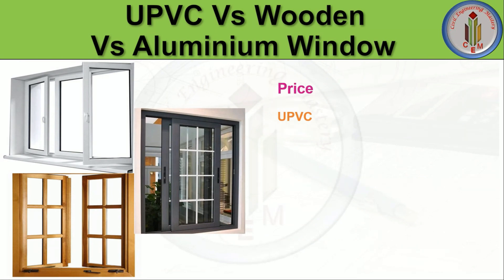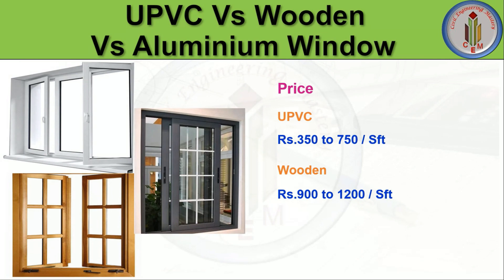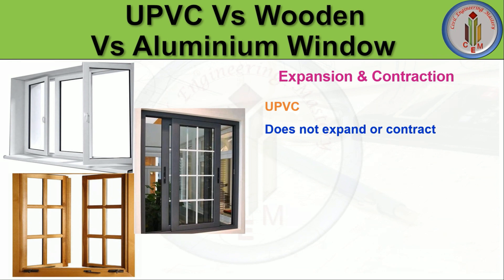Next, let's discuss price. uPVC windows cost about ₹350 to ₹750 per square feet, with higher-end models costing more. Wooden windows are the most costly, at around ₹900 to ₹1200 per square feet. Aluminium windows cost around ₹250 to ₹500 per square feet, with higher-end models costing more. These are current market prices and will vary according to location and model chosen.